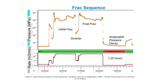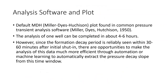The paper also talks about some analysis software and the plots that are suggested. The paper gives a default MDH plot — Mueller, Dyes, and Hutchinson — found in common pressure transient analysis software. The analysis of one well with moderate experience could be completed in about four to six hours. But since the formation decay period is reliably seen within 30 to 60 minutes after initial shut-in, there are opportunities to make the analysis much more efficient through automation or machine learning to automatically extract the pressure decay slope.